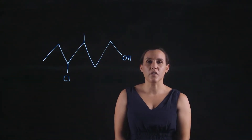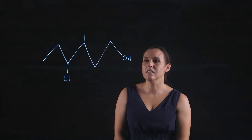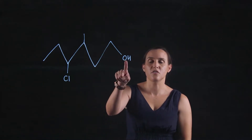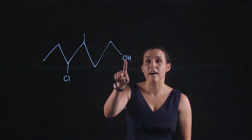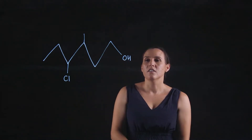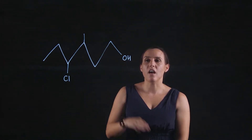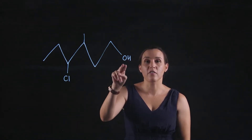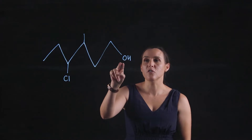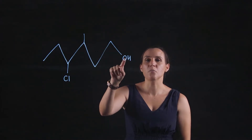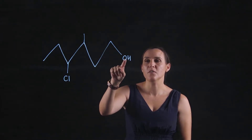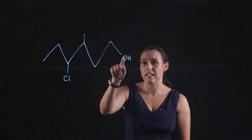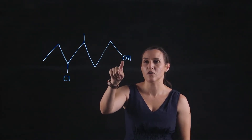This is the structure we're going to look at today. Its functional group is an alcohol. This will be a high priority functional group, so my numbering on my carbon chain will start next to this functional group.